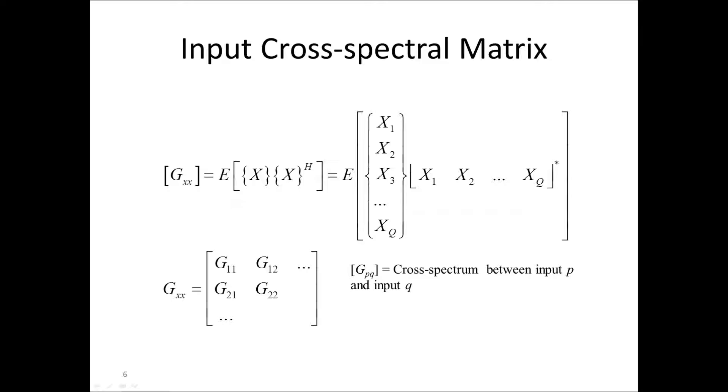That is, on the diagonal, Gxx contains the power spectral densities of each input channel, and on the off-diagonal, it contains the cross-spectra of the corresponding pairs of input signals.